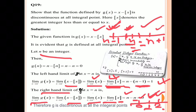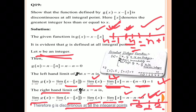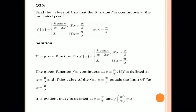The left-hand limit is 1 and the right-hand limit is 0, so they are not equal. Therefore g is discontinuous at x = n. Since n was any integer, g is discontinuous at all integral points.